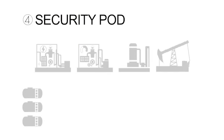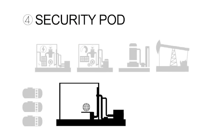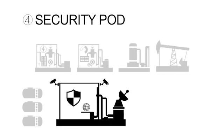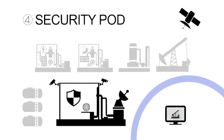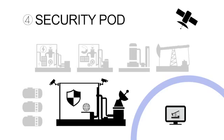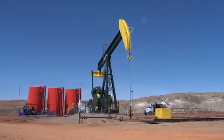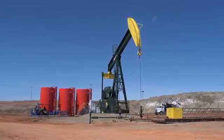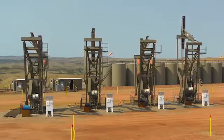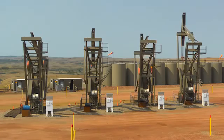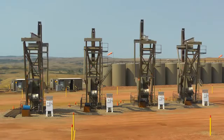The fourth component in the system is Omni's SecurityPod. Equipped with cameras, geosensing technology, and satellite feedback, the SecurityPod enables remote monitoring from anywhere in the world. It gives the producers a bird's eye view into what's happening on that pad, gives the landowners a bird's eye view into what's going on, and provides security so that nothing gets stolen, broken, or disappears.